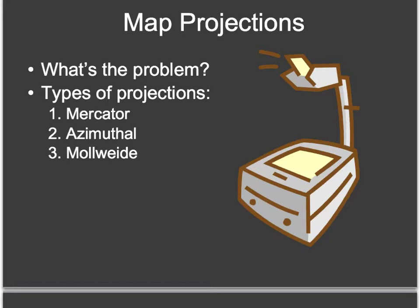We're going to talk about map projections now, and I have to spend a second to talk about the problem with map projections. The problem with a map projection is you're basically taking an object — our world — which is in three dimensions, and you're trying to put it into two dimensions on a piece of paper. You have to make some approximations when you do that. We're going to be talking about the three main types of projections: the Mercator projection, the azimuthal, and the Mollweide. We'll cover what they're used for, how they can be useful, and some of the weaknesses as well.